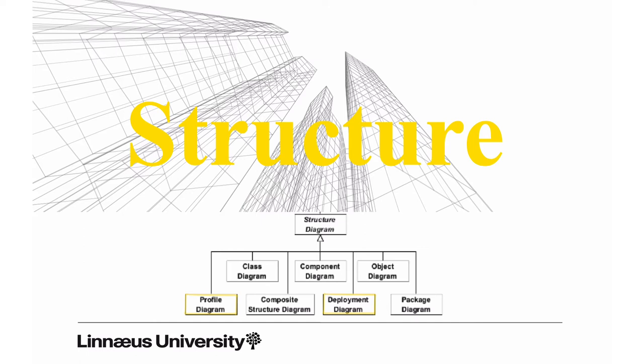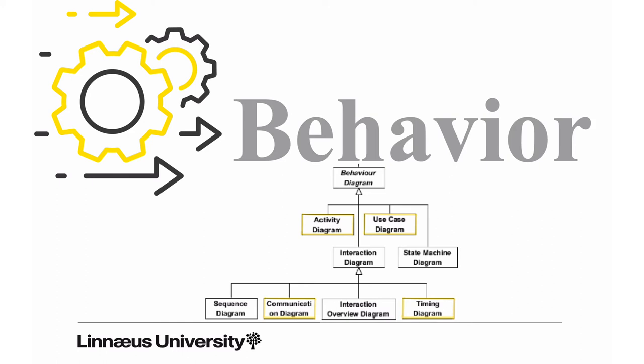The second class, the behavior diagrams - use case diagrams and activity diagrams. Use case diagrams model high-level functionality for various stakeholders. You can use activity diagrams to model the flow of events that describes the insides of the use case, what could happen if a user initiates the use case.